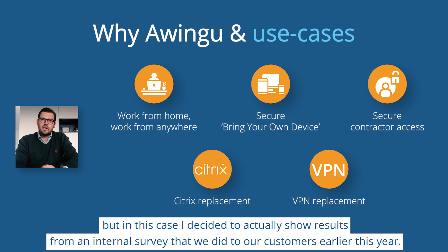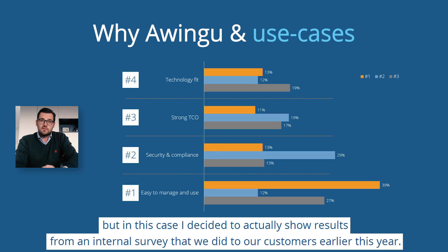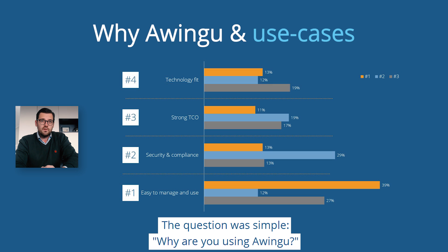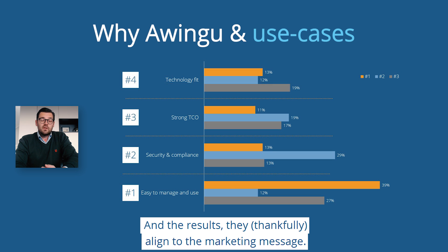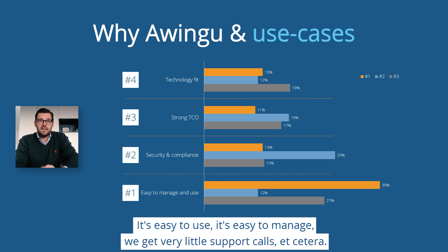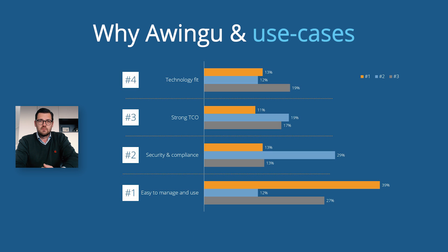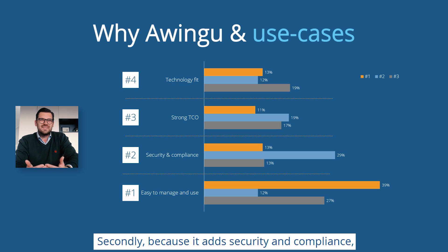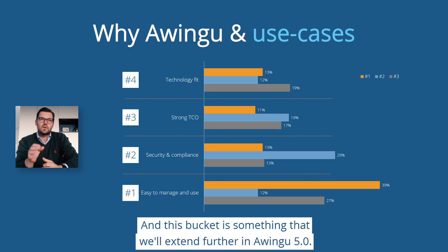We decided to show results of an internal survey we did with our customers earlier this year. The question was simple: why are you using Owingo? The results thankfully align with the marketing message. First, because it's a simple solution — easy to set up, easy to manage, very few support calls. Secondly, because it adds security and compliancy through all of the built-in security features, and this bucket will extend further in Owingo 5.0.